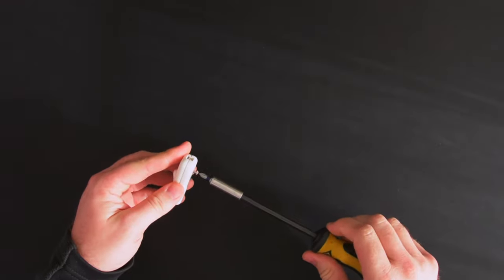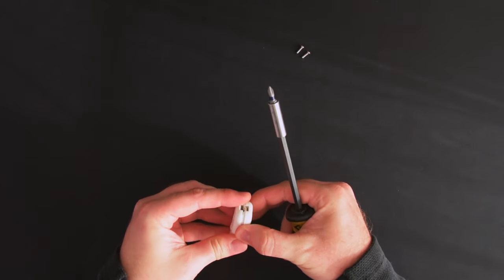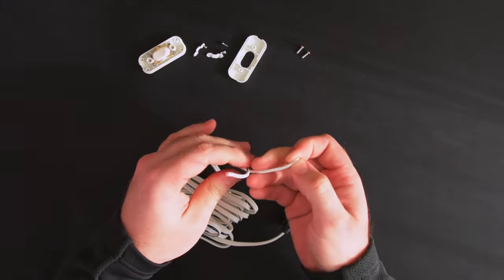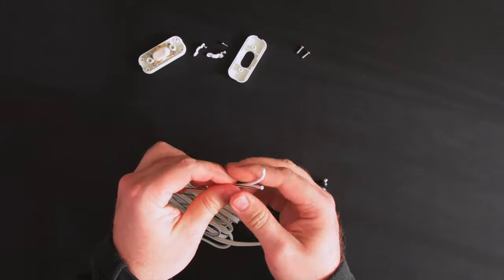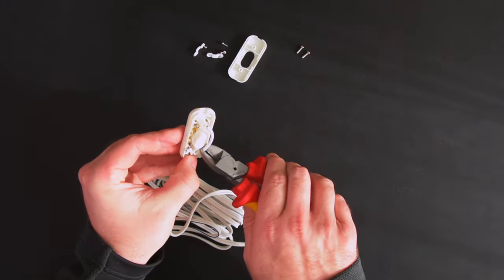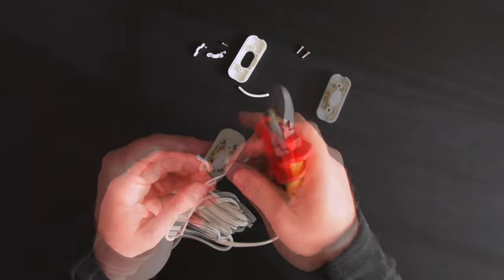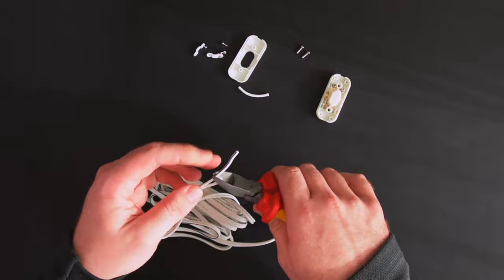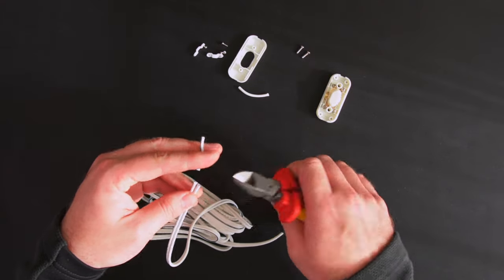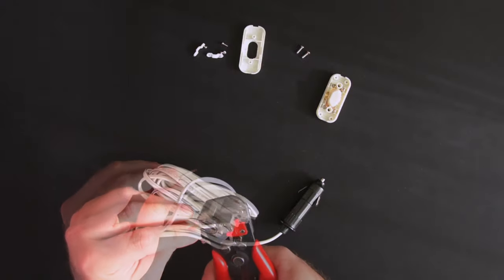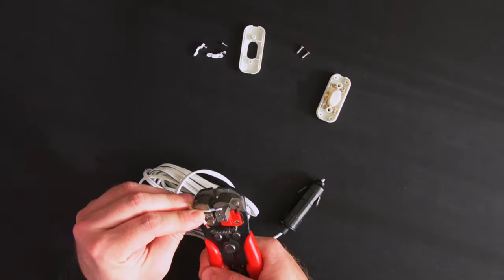I used a number one Phillips driver to open the switch and then to remove the cable clamps and loosen all four of the terminals. I chose to connect the power cable first and laying it in position allowed me to see where the wires needed to be cut. When I was happy with the length I removed about five millimetres of insulation from each wire and inserted them into the appropriate terminals.